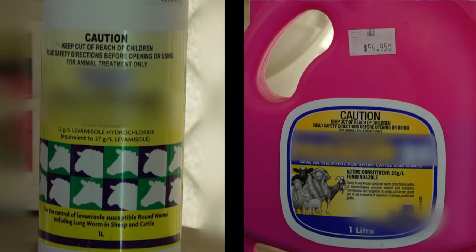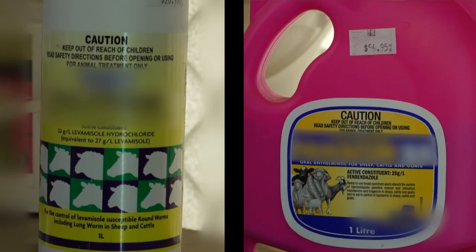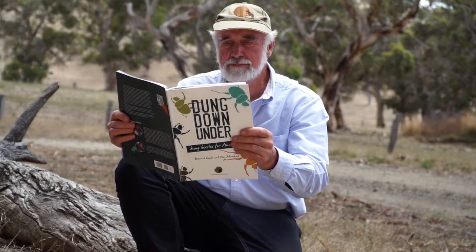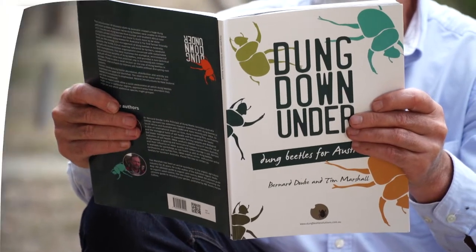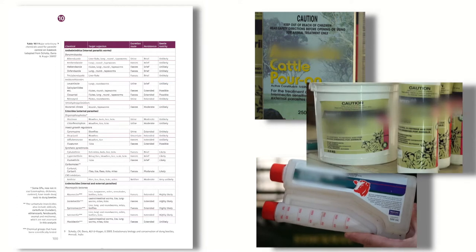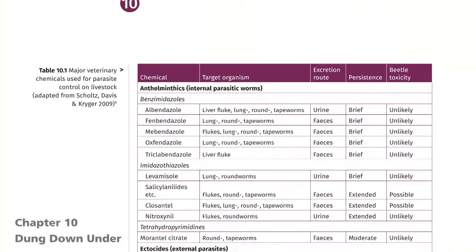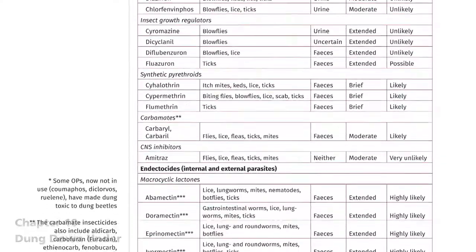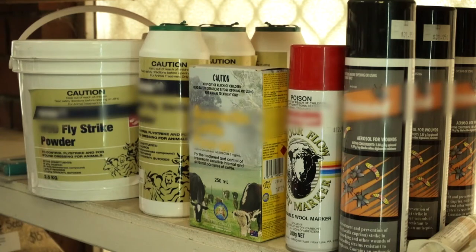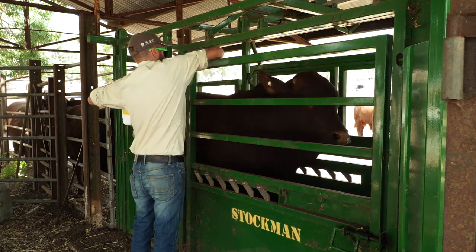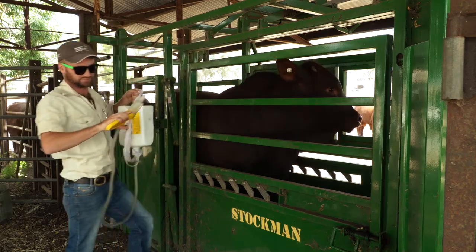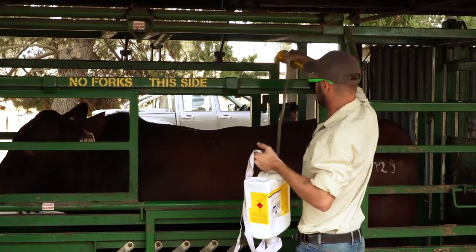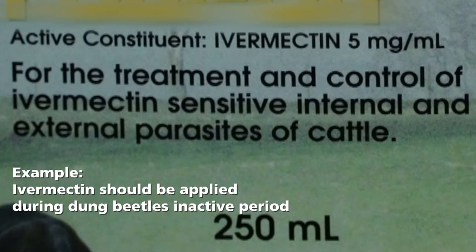However, there are also dung beetle-friendly chemicals. Before you apply chemicals to your herd, it's important to find out what type of parasites you are trying to control. Chapter 10 in Dung Down Under has a table detailing the chemicals for parasite control and their threat levels to dung beetles during their life cycle. Choose a chemical with the least likely impact on dung beetles, and avoid applying any chemicals during the breeding season. If you do need to use harmful chemicals, do this at the time when no dung beetles are active.